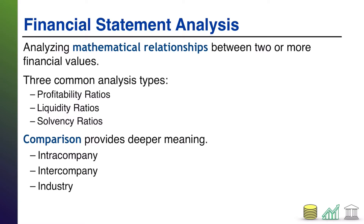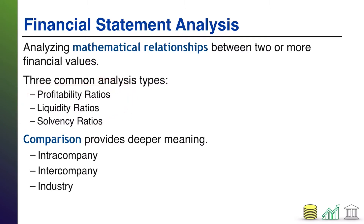Financial statement analysis is basically mathematical relationships, and there are three common types of relationships that investors and other users of financial statements typically look at: what we call the profitability ratios, the liquidity ratios, and the solvency ratios.